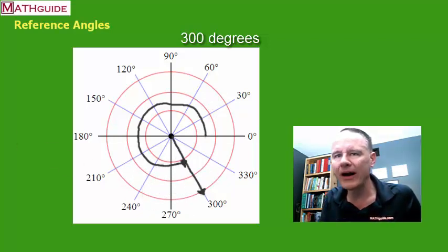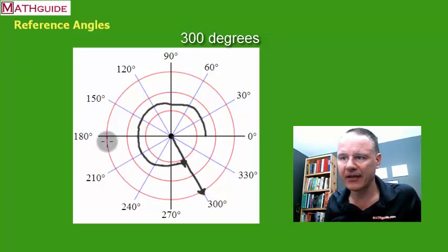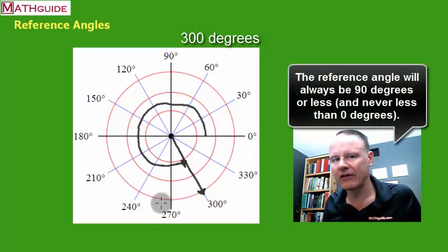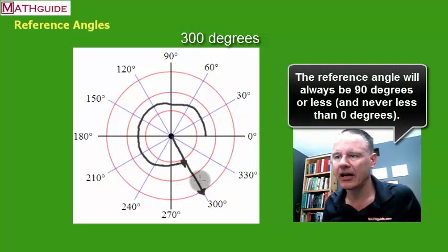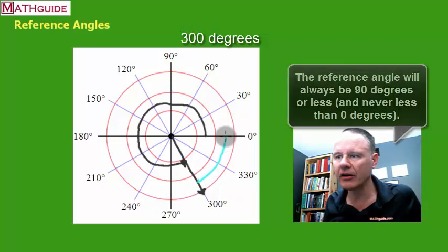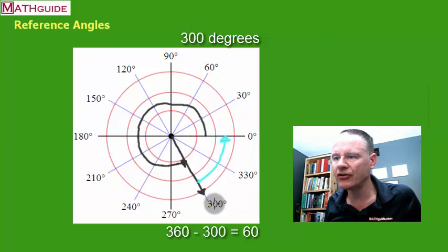So now I want to know what is the reference angle. Okay, well the reference angle is the closest angle to the x-axis. So not going this way, that's not the closest angle. So the reference angle will always be 90 degrees or less. Okay, so here I would say the closest angle is right over here. Okay, so what is that? Well, 300 to 360, that's another 60 degree reference angle.